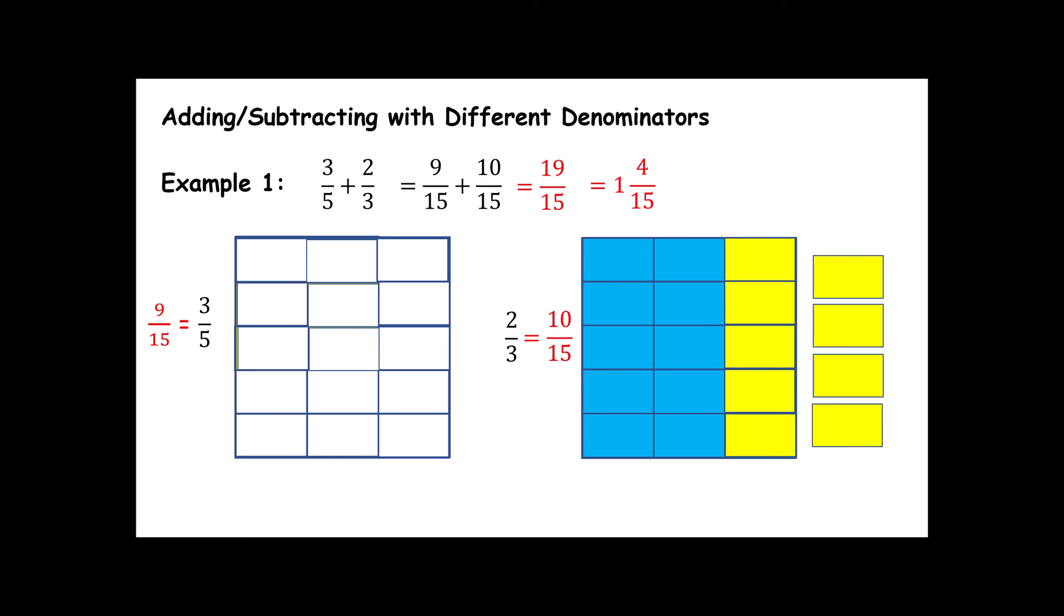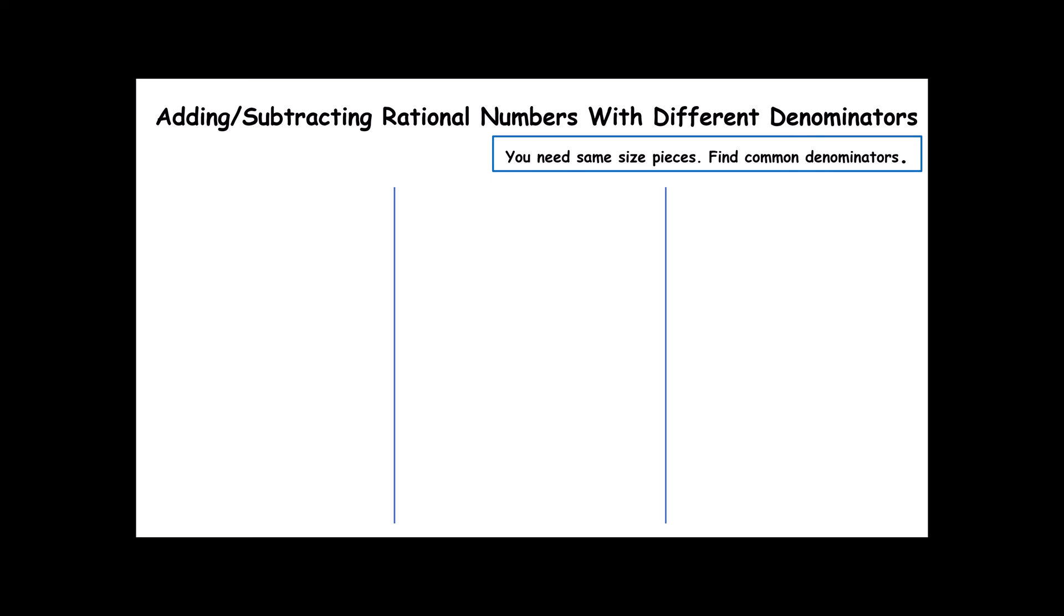Now, this is a really long and complicated process that involves taking different size pieces and turning them into same size pieces. But I can make this a lot simpler by doing it mathematically instead of pictures. The picture example is just to show you the basic idea. Different size pieces have to be turned into same size pieces so that we can combine them. We need same size pieces, which means we need the denominators to be the same.